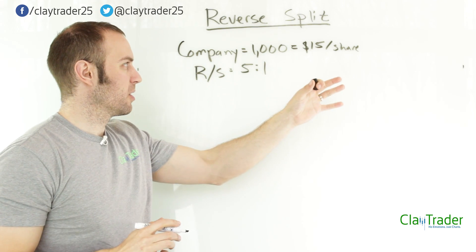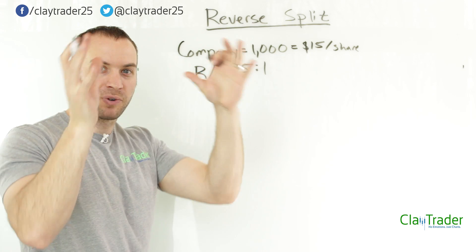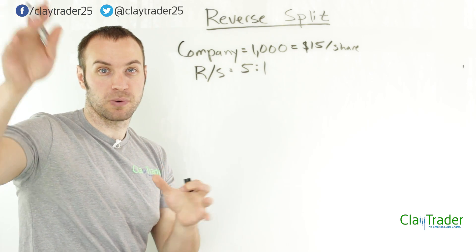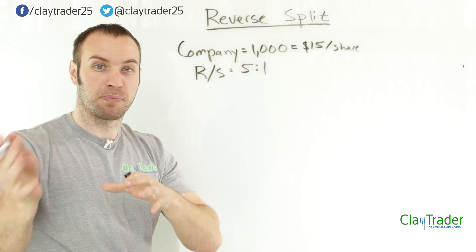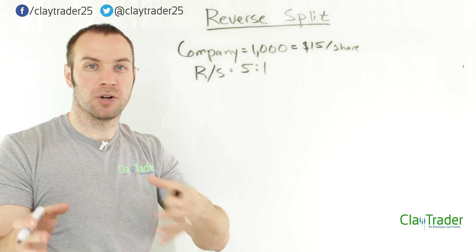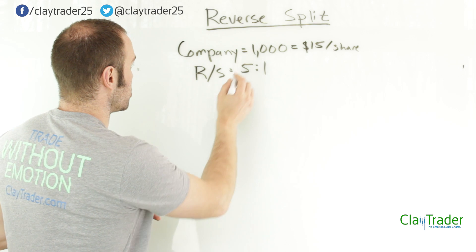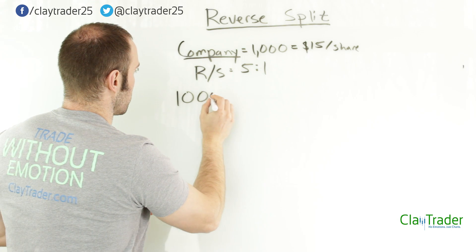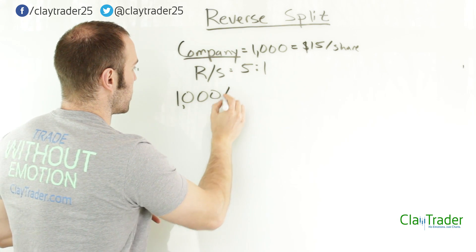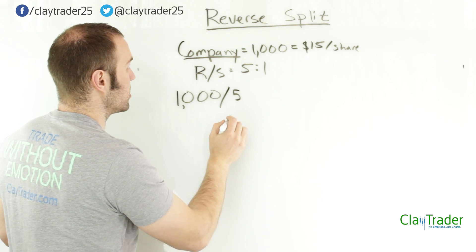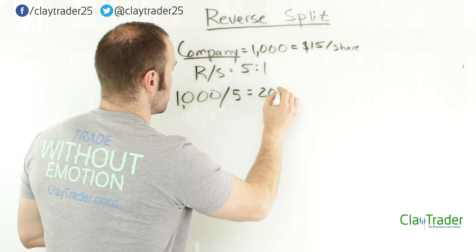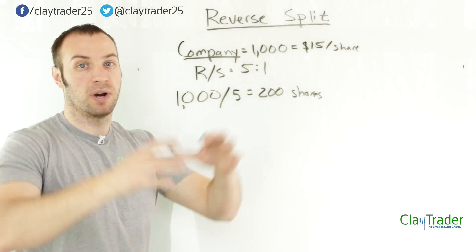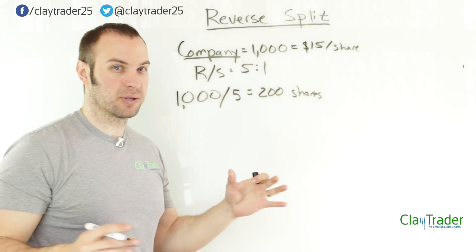So what does that mean and how can you do the math? This means that they're going to reduce the number of shares out there, and by reducing the number of shares, that's actually going to prop up and increase the share price. You take the number of shares — in this case 1,000 — and divide that by whatever the reverse split amount is, which is five. So 1,000 divided by five equals 200 shares. After the reverse split happens, instead of the company having 1,000 shares available, they're only going to have 200 shares available.